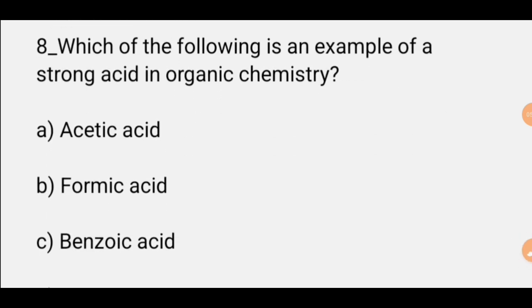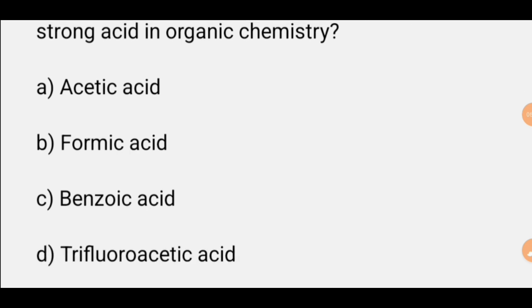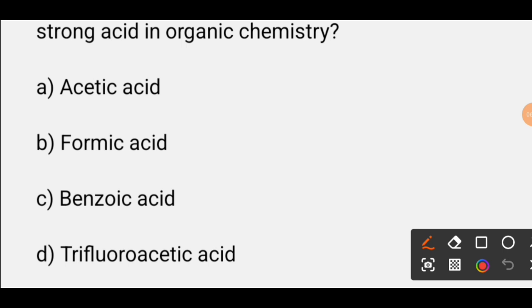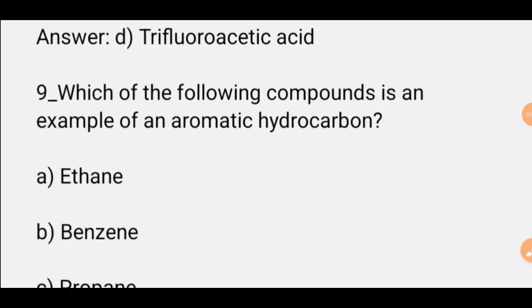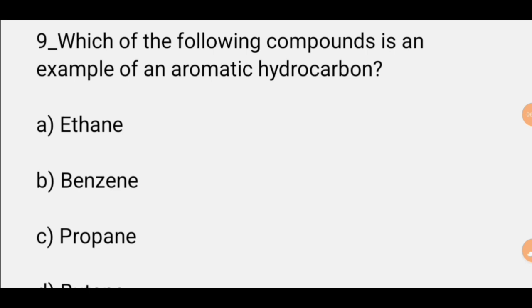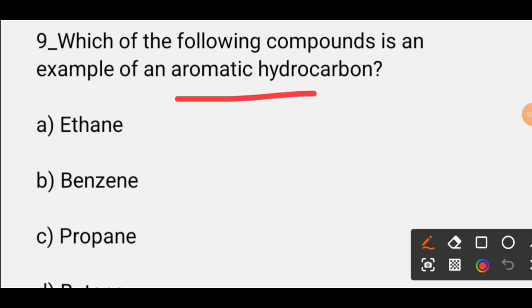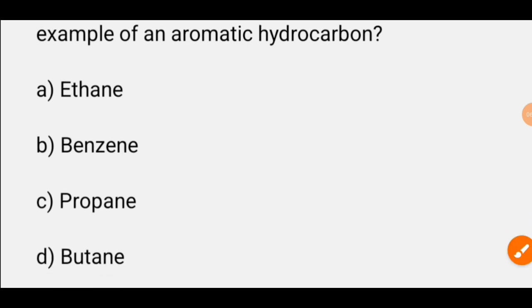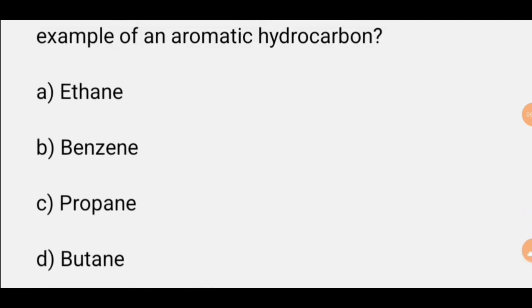MCQ number eight: Which of the following is an example of strong acid in organic chemistry? Options are acetic acid, formic acid, benzoic acid. The correct answer is option D, trifluoroacetic acid. MCQ number nine: Which compound is an example of aromatic hydrocarbon? Options are ethyne, benzene, propane, butane. The correct answer is B, benzene.